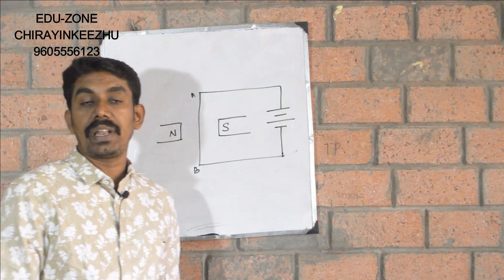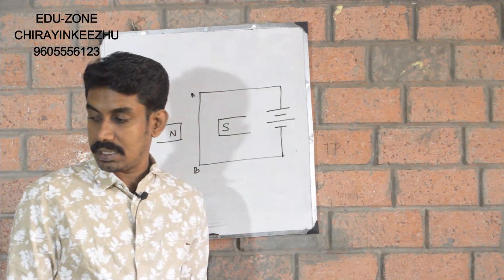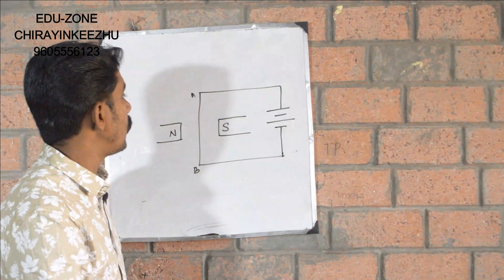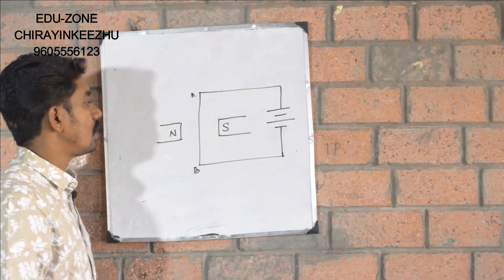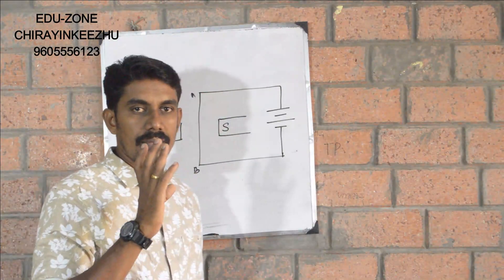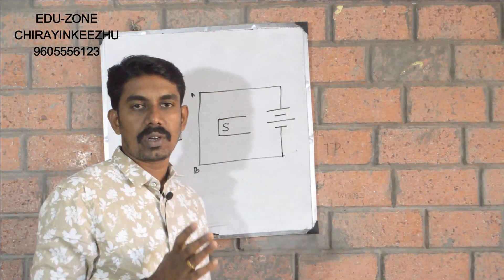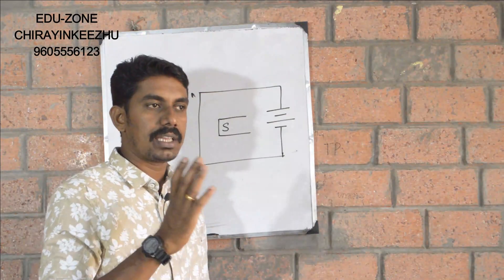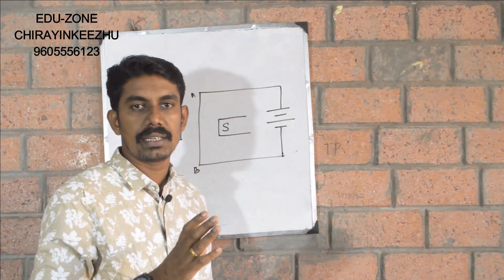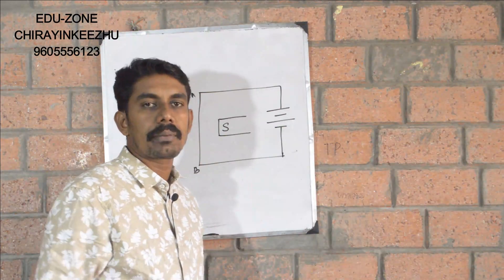Magnetic effects of electric current. We are going to take a current solenoid and a magnetic field. That is a soft iron piece in a magnetic field. We are going to act as a bar magnet.